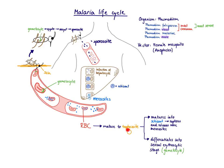From the trophozoite feeding stage, the malaria parasite can go one of two ways. Some trophozoites mature into schizont again — the replication stage where asexual replication happens. Once the schizont ruptures, it releases merozoites that can infect more red blood cells. This is how Plasmodium ensures the infection continues, infecting more red blood cells and further replicating.